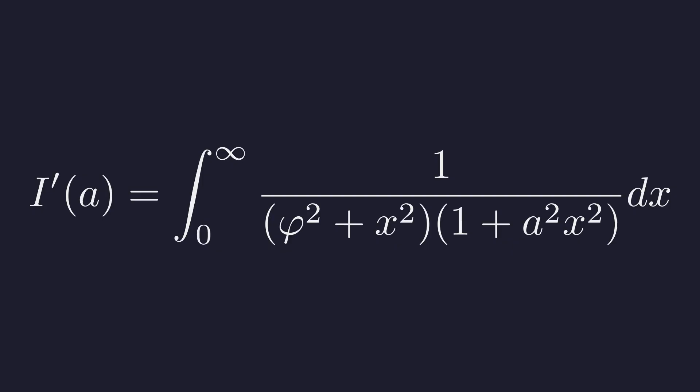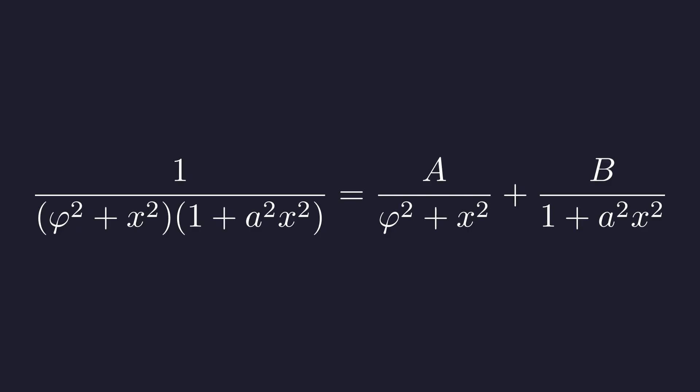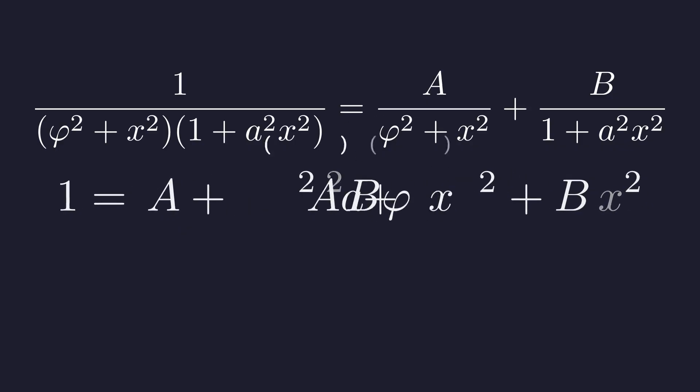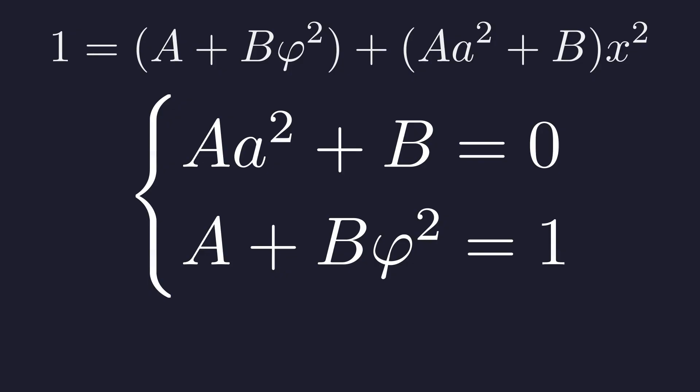We can solve this using partial fractions. Let's break down the integrand into simpler pieces. We set up our partial fraction decomposition with the goal of finding constants A and B. Multiplying through by the common denominator gives us an equation, and expanding the right side, we group terms by powers of X squared. For this equation to hold for all values of X, the coefficients on both sides must match. The coefficient of X squared is 0, and the constant is 1.